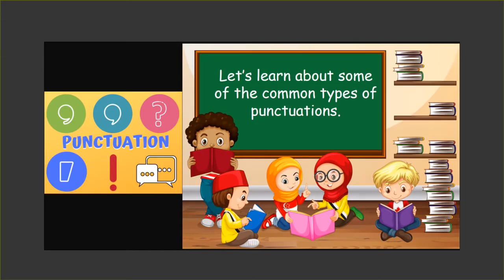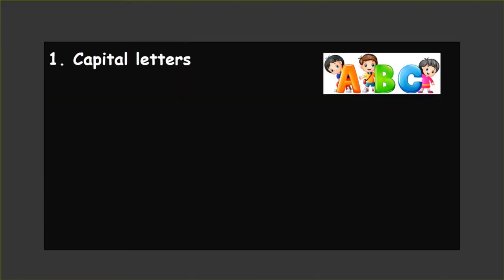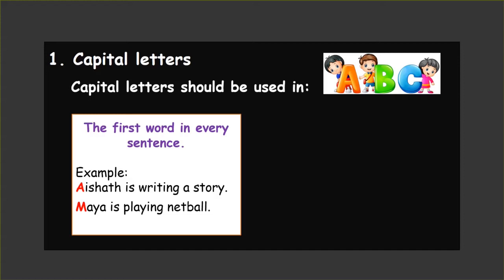Let us learn about some of the common types of punctuation. First one: capital letters. I know that you all are familiar with capital letters, but do you know where we have to use them? Capital letters should be used in the first word of every sentence. You have to begin a sentence with a capital letter. For example: 'Aishad is writing a story' — Aishad is the beginning of that sentence, so we use a capital letter. 'Maya is playing netball' — Maya is the first word, so we use a capital letter.